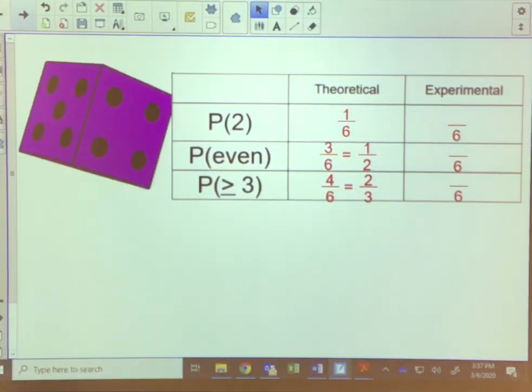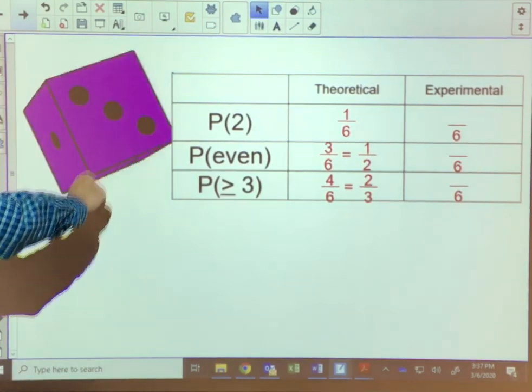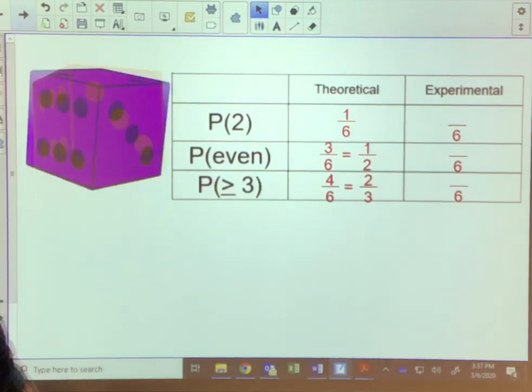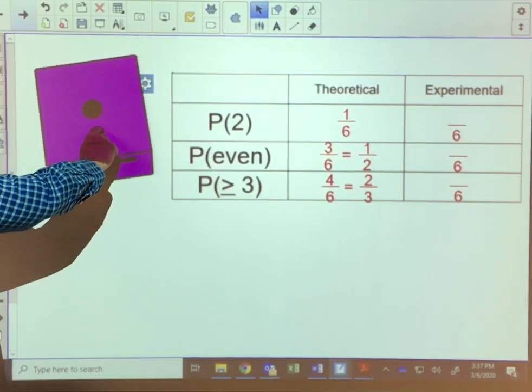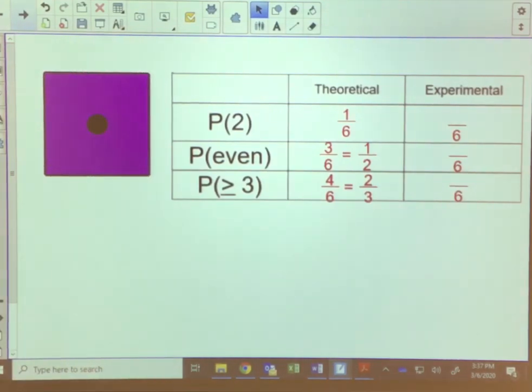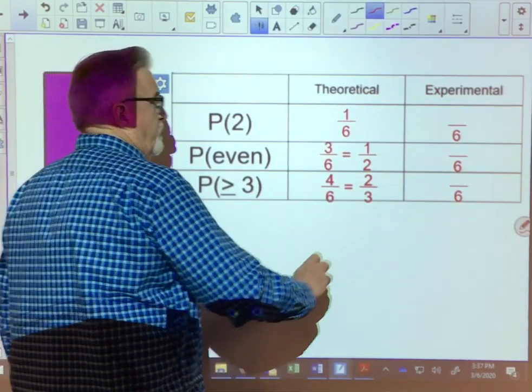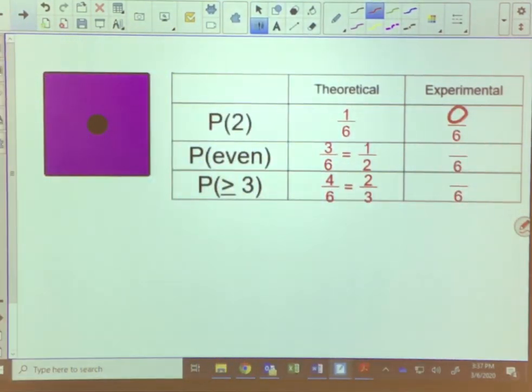Here's our third roll, we get a four. Still haven't gotten a two. Here's our fourth roll, we get a five. Here's our fifth roll, we get another four. And here's our sixth roll. We didn't get any twos out of that six throws.